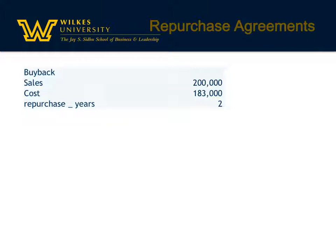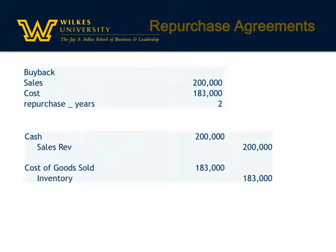Now let's look at a regular agreement to repurchase inventory that's unsold at the end of a specified period of time. Here there were sales of $200,000 that cost $183,000, and anything not sold would be repurchased in two years. This is your typical entry: you simply debit cash or accounts receivable and credit sales revenue for the sales price, and debit cost of goods sold and credit inventory for the cost of the asset. Nothing unusual for this transaction.